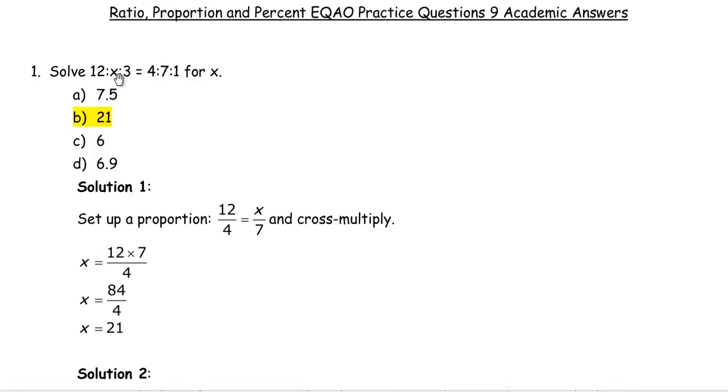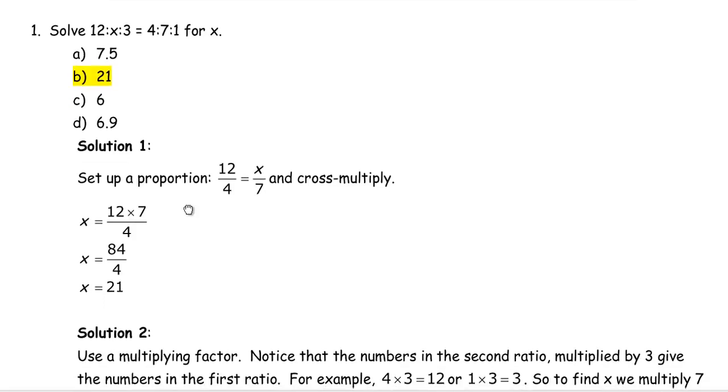Question number 1. Solve 12:x:3 = 4:7:1 for x. What we're going to do is I'm going to show actually two solutions for this.